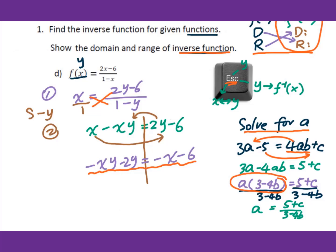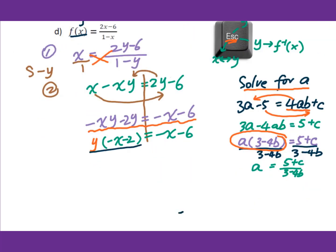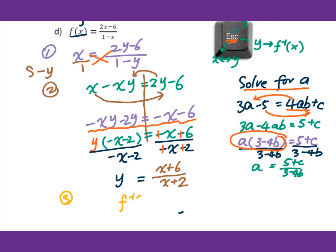Going back to the inverse function: from negative xy minus 2y equals negative x minus 6, we factor out y: y times (negative x minus 2) equals negative x minus 6. Divide both sides by (negative x minus 2). For fractions, the first term of the denominator is normally positive, so we switch signs, getting y equals (x plus 6) over (x plus 2). The last step is to change y into inverse function symbol: f⁻¹(x) equals (x plus 6) over (x plus 2).